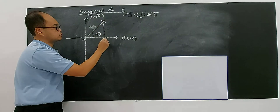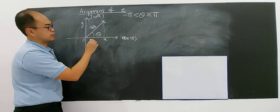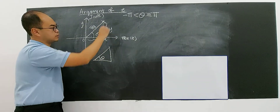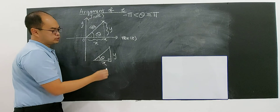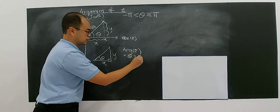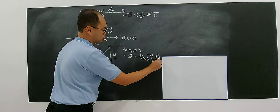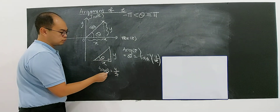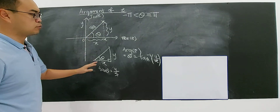Very simple. This will be your X and this will be your Y. To find the argument, you can use tangent. If you draw the triangle, this will be the X and this is your Y — it's opposite over adjacent. So the argument of Z, which is theta, is equal to arctan of Y divided by X, because tangent theta is actually Y over X.